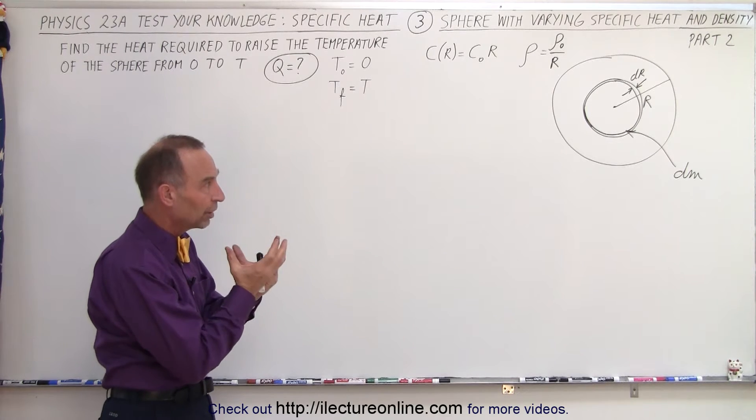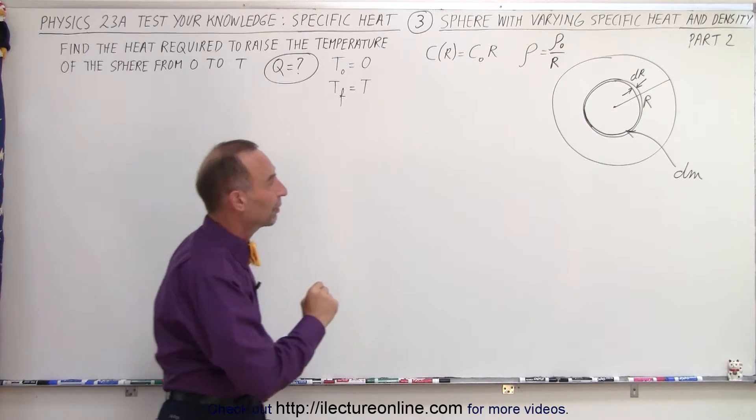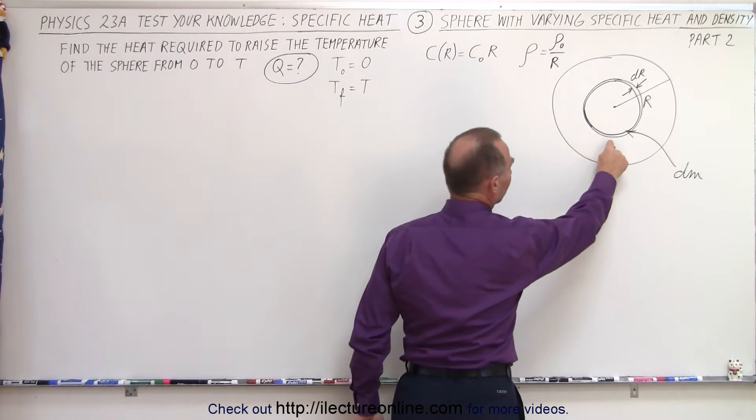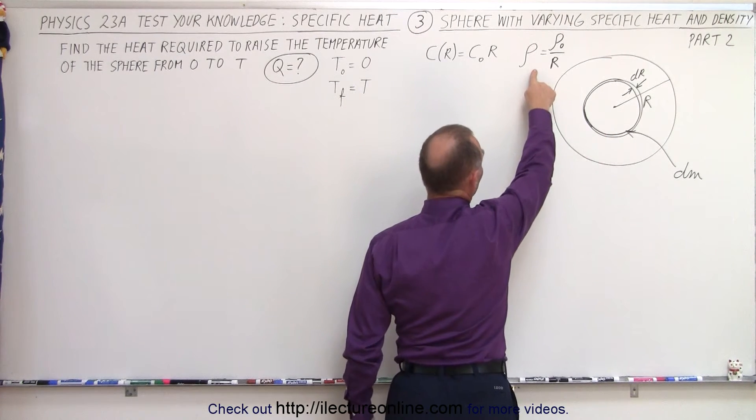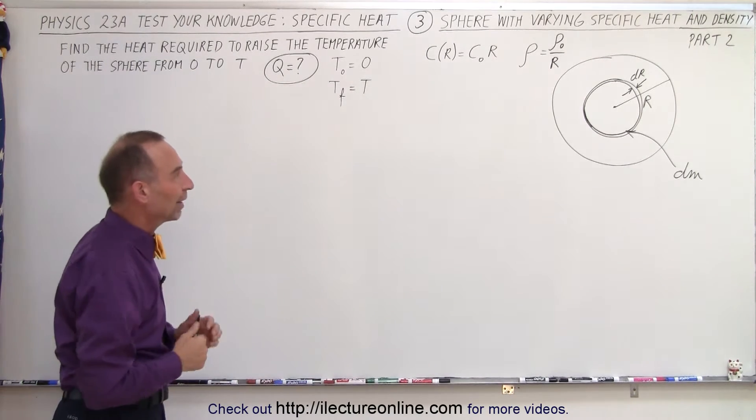And again, we're going to take small little spherical shells and we're going to integrate over those shells. We're going to figure out how much heat is required for each little shell, now that we also have a varying density, and integrate, add them all up to find the total heat.